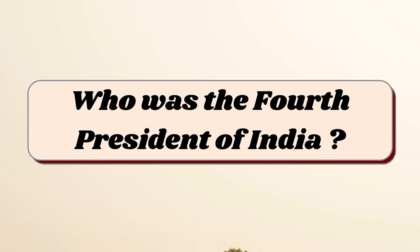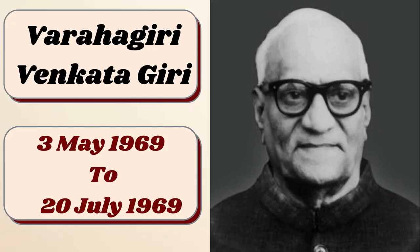Who was the fourth president of India? Varahagiri Venkata Giri was the fourth president of India, from the 3rd of May 1969 to the 20th of July 1969.